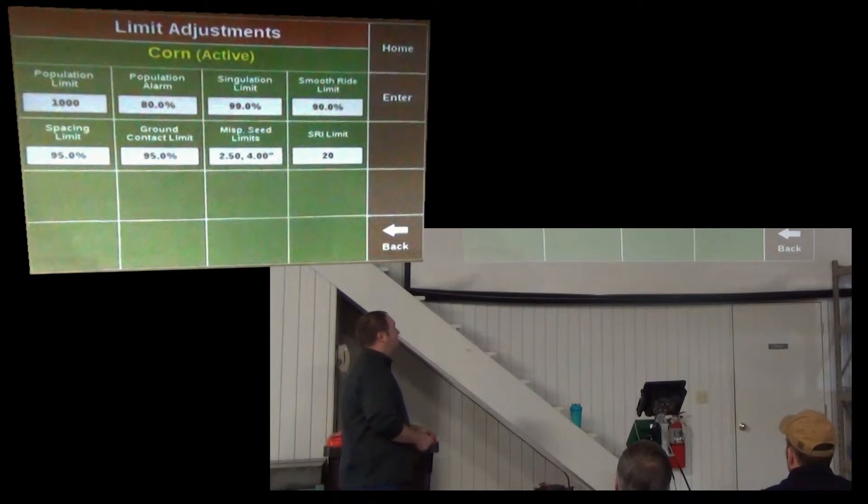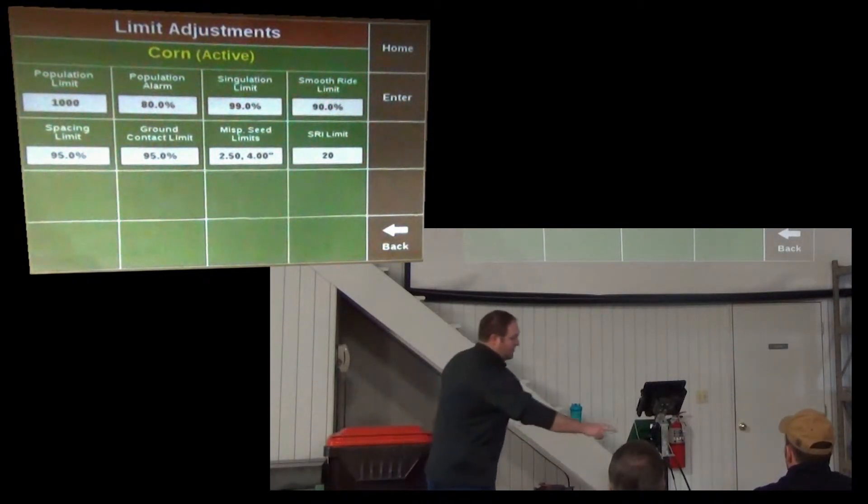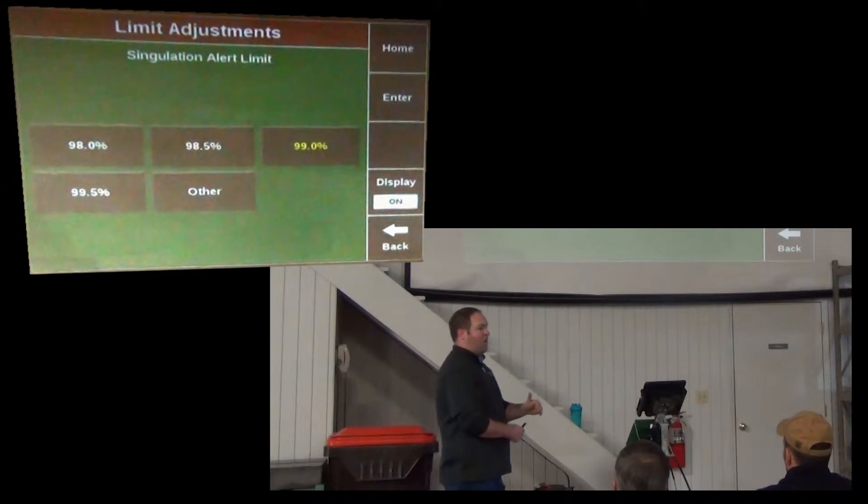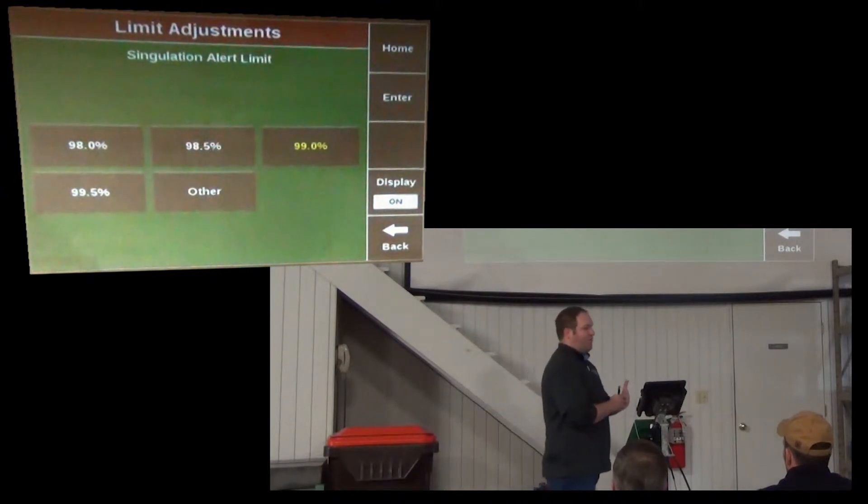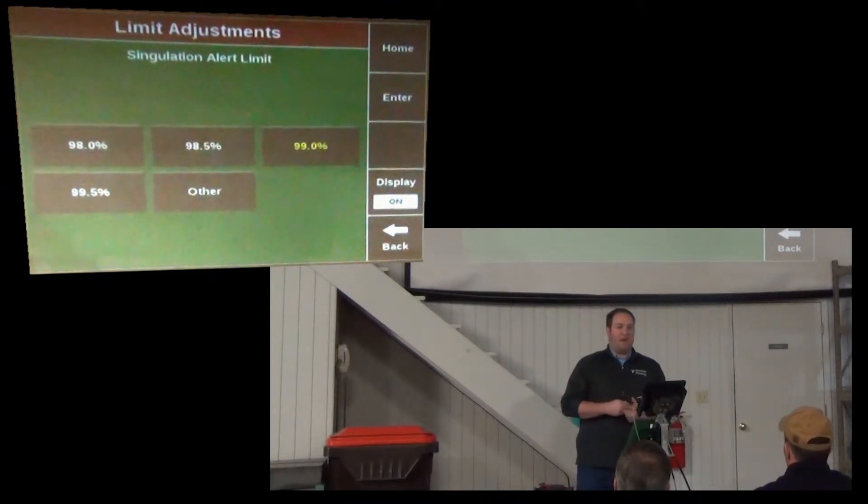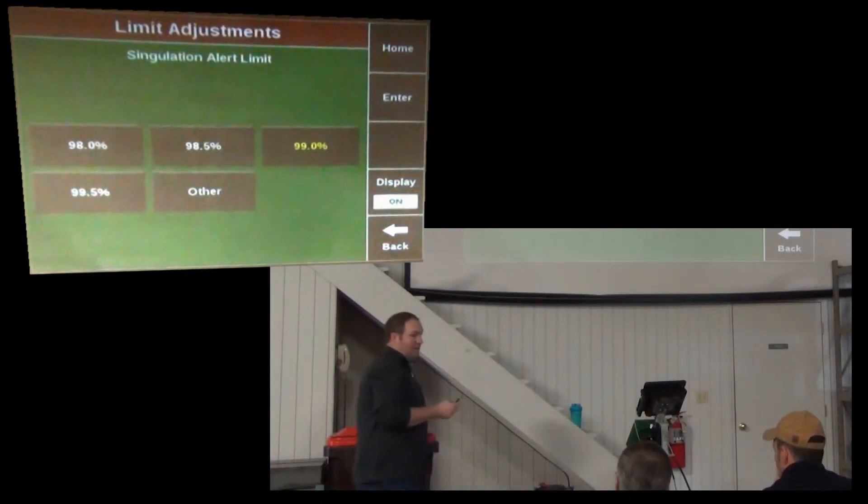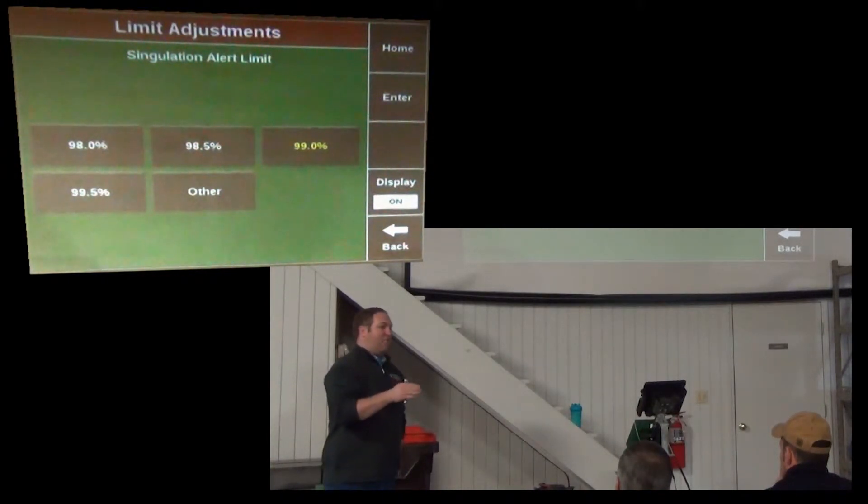The singulation limit, you want across the top. This is one of the more important ones because singulation is a very important factor to yield. So if I touch on that box, I can slide any of these preset numbers or I can slide other. So you want to set this right below the singulation performance you expect from your meters. So if I'm operating a V-set meter, such as what this planter has on it, I'd probably set this at 99%. Then if I have one row that's singulating below 99, it's going to alert me. If the planter average is below 99, the big box is going to turn yellow.